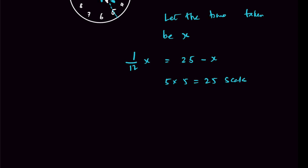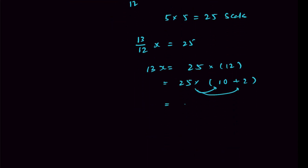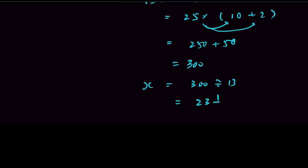Solving the equation: 1/12 x + x = 25, which gives 13/12 x = 25. Then 13x = 25 × 12 = 300. So x = 300 ÷ 13, giving 23 and 1/9 of a minute. After 23 and 1/9 minutes, the minute hand and hour hand are at equal distance from the number 5.